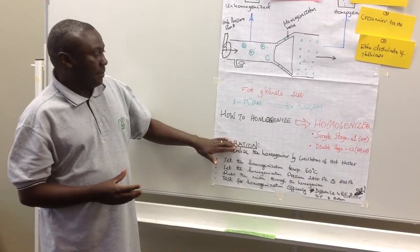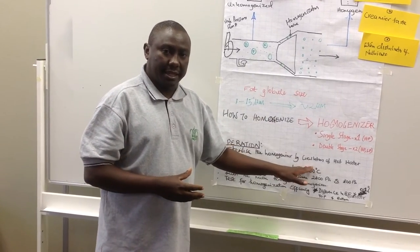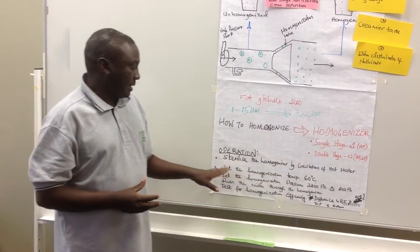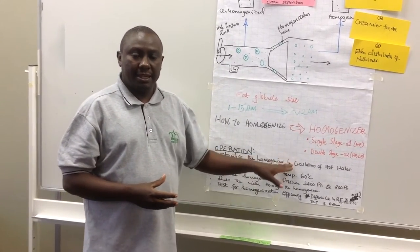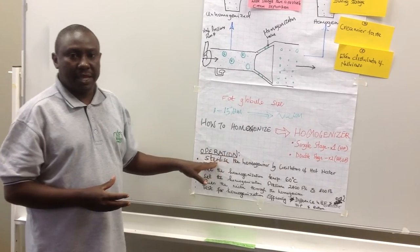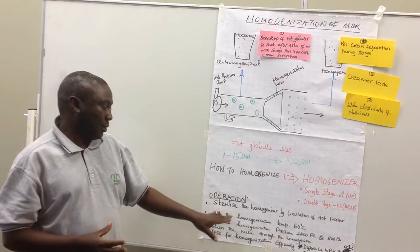This enzyme is destroyed at 60 degrees. So we set the right homogenization temperature. If you don't set the right temperature, the enzyme lipase will be active in milk and will destroy your milk.